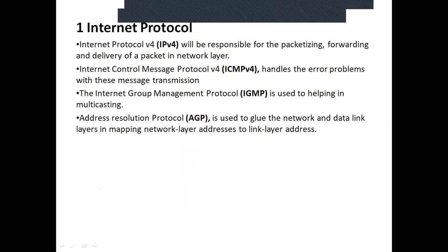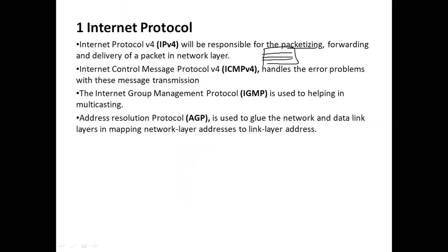Packet sizing, forwarding, and delivery are the three key things we do with IP. Packet sizing means when you have a huge piece of data — say 1 GB — and the network speed is 200 to 300 kbps for lucky ones, or even just 20 to 30 kbps on a bad mobile network, you cannot send the entire 1 GB at once. So you divide it into small chunks and pieces and send them one at a time.